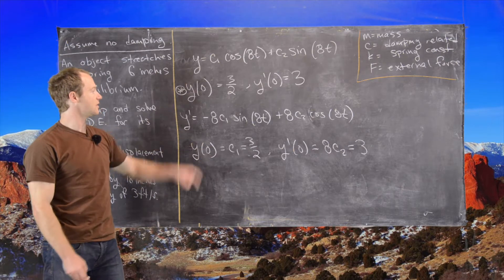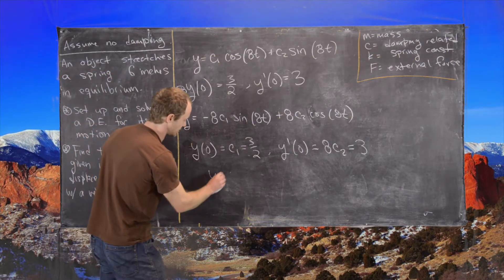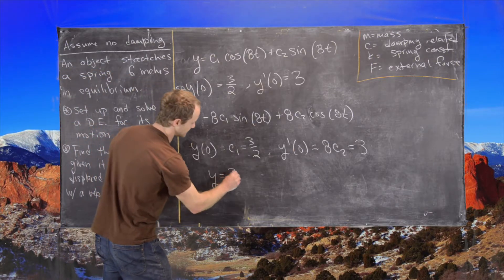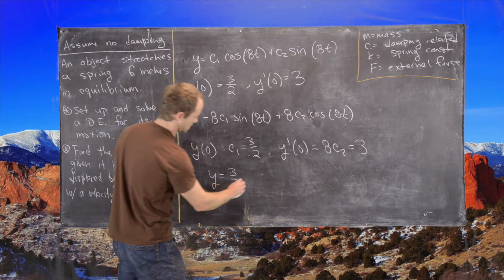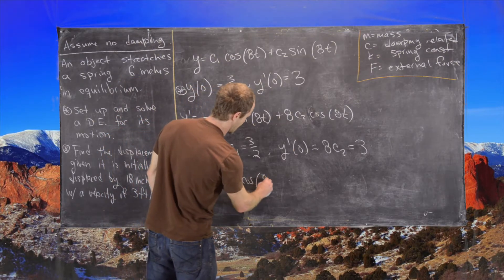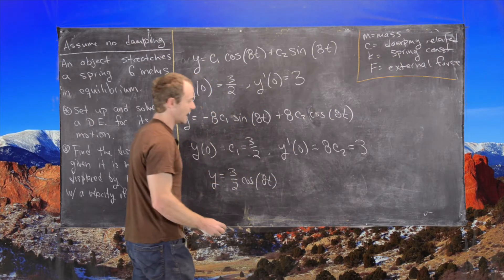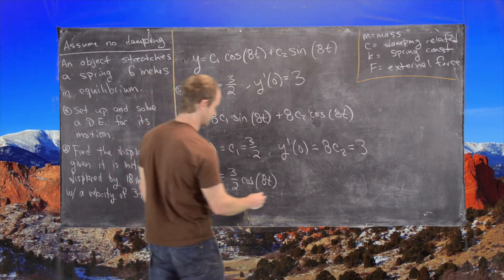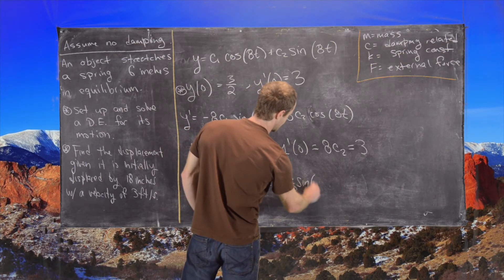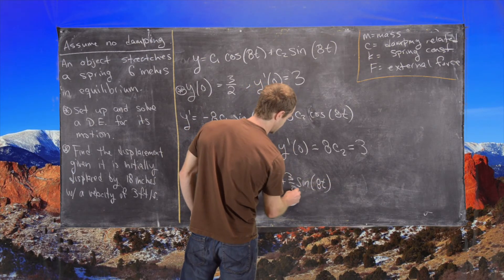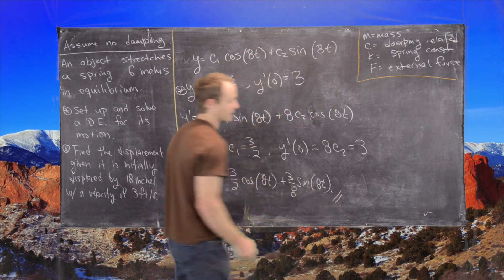Okay. Now we're good to go. So we can plug this into the original, and we get y equals 3 over 2 times cosine of 8t, and then plus 3 over 8 sine of 8t. And that will be our final answer.